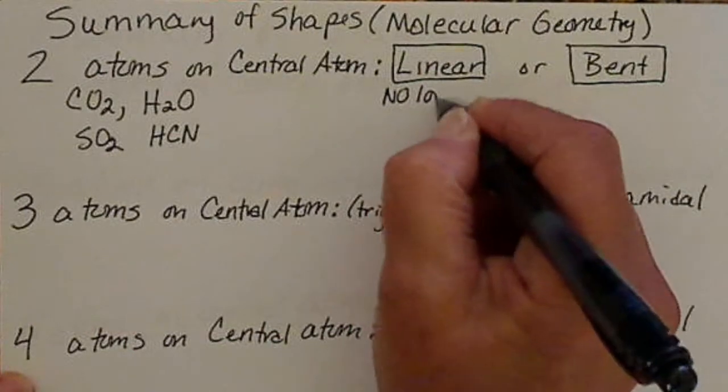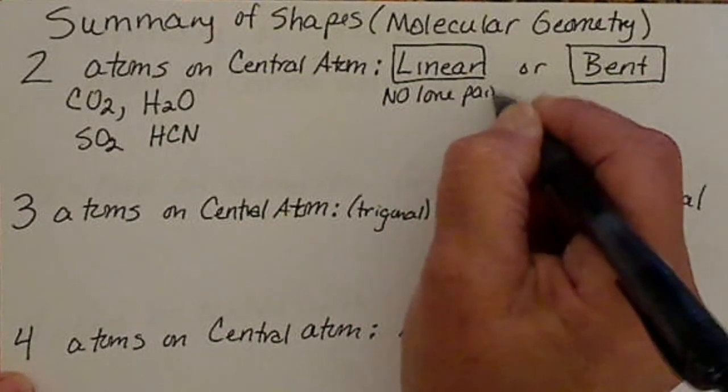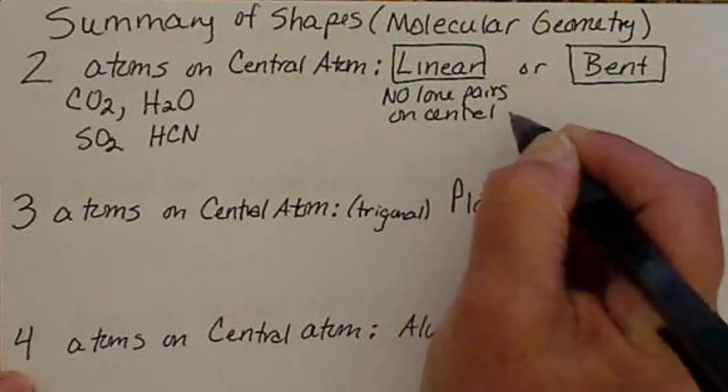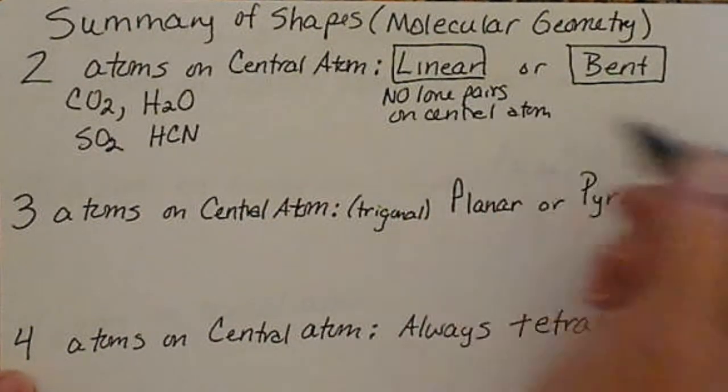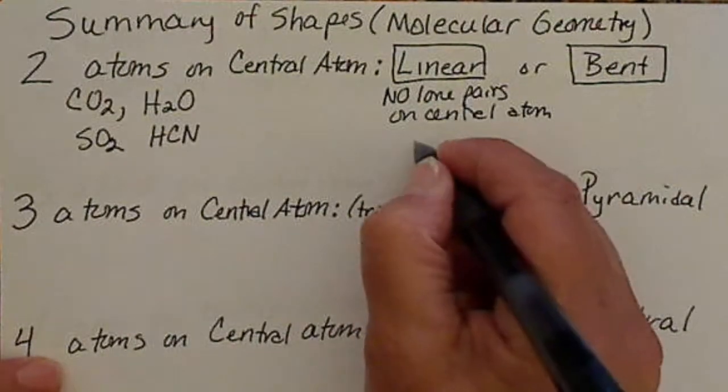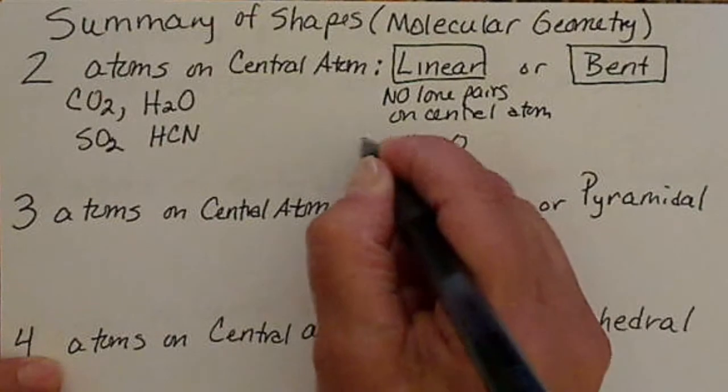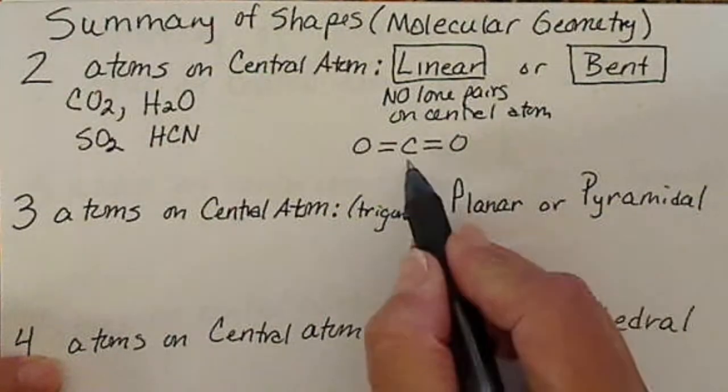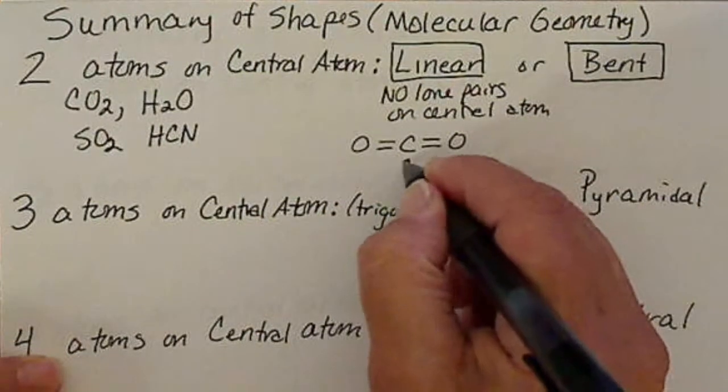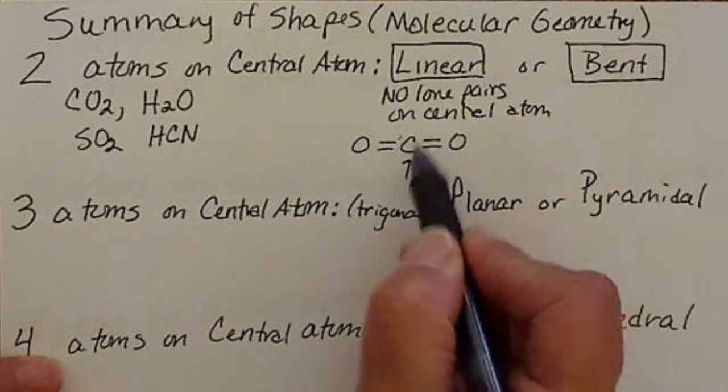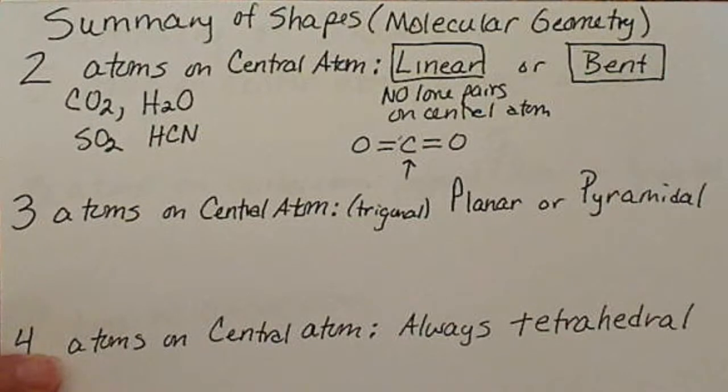If we do a dot structure for CO2, we're going to see that we have four lines and this ends up looking like this, and there are no lone pairs on the carbon. So these two groups of electrons are going to try to maximize their angle between them, and that would give us a linear shape.